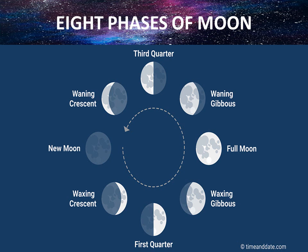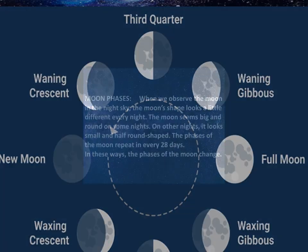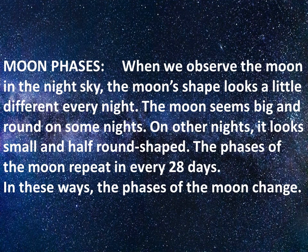First there is a new moon, then waxing crescent, then first quarter, then waxing gibbous, then full moon, then waning gibbous, then third quarter, then waning crescent — then again this cycle repeats. This is a cycling process of moon phases.